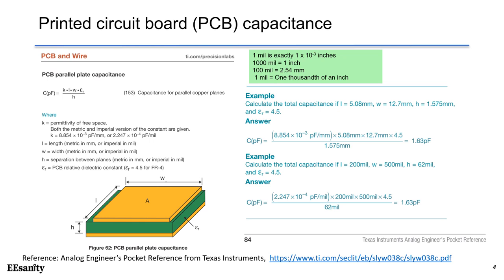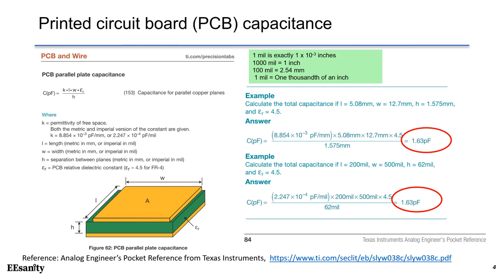Both examples have the same length in different units and therefore have the same capacitance as the result. Taking a close look at this example: L is 5.08 mm, W is 12.7 mm, H (the distance) is 1.575 mm, and epsilon sub R for FR4 material is 4.5. Using this equation, we get the parasitic capacitance of about 1.63 pF, which is very small.